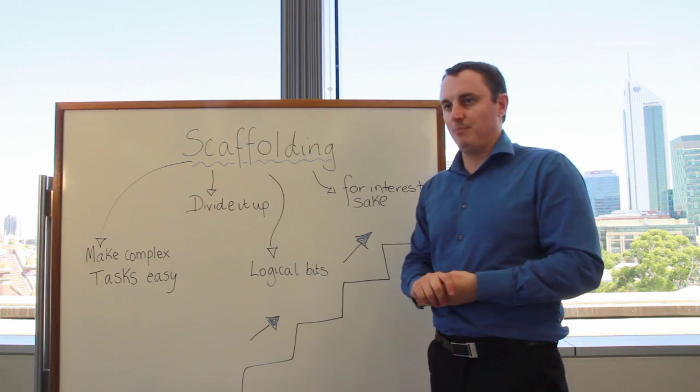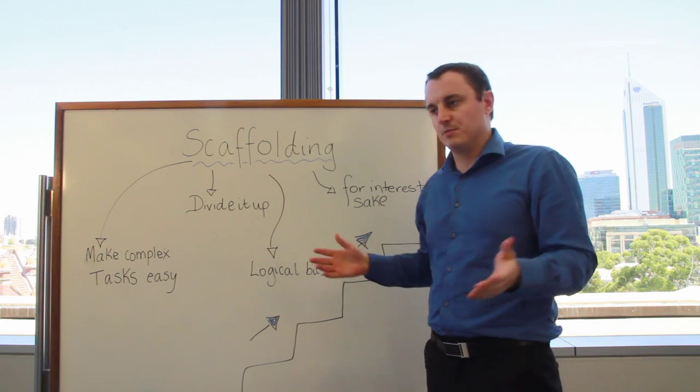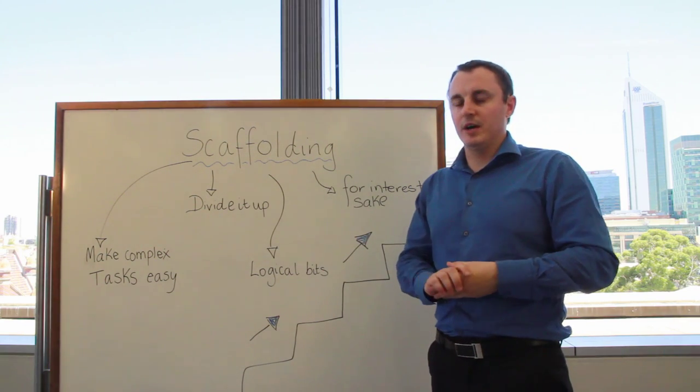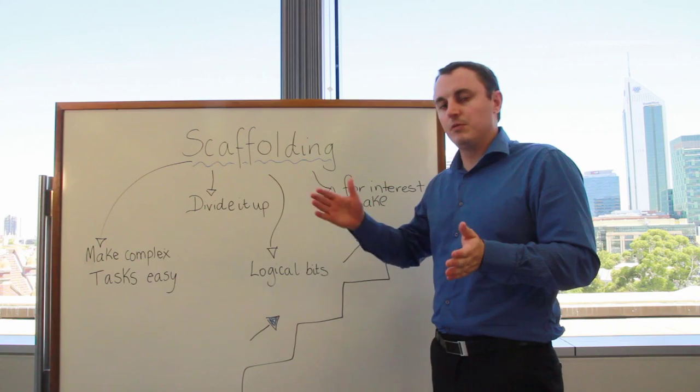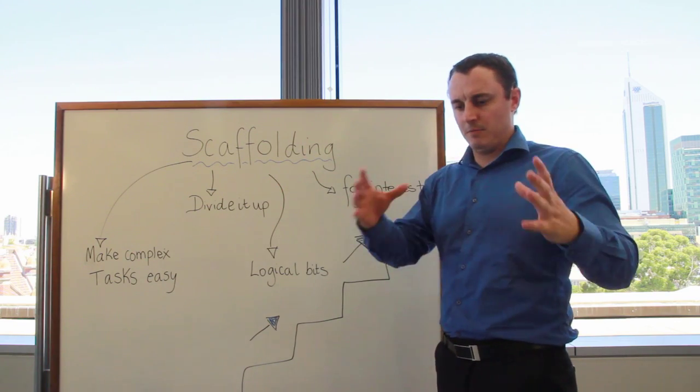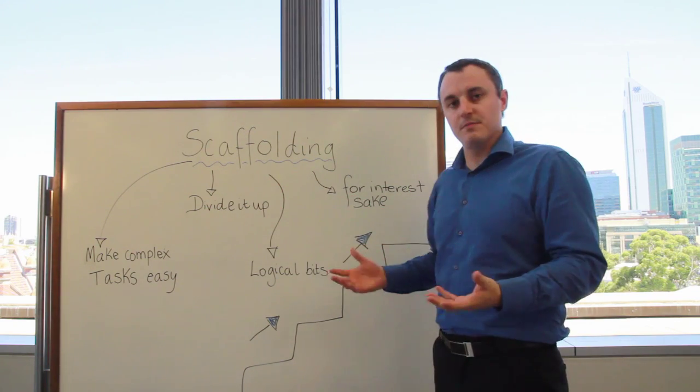And of course, when you're dividing things up, make sure it's logical, or evenly divisible. If you've got one task, you divide it into lots of equally sized bits, as opposed to one big bit and a couple of little bits. Generally, that's the best way to do it.